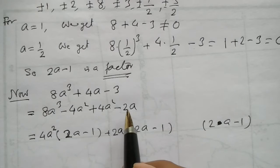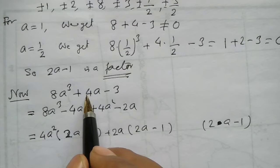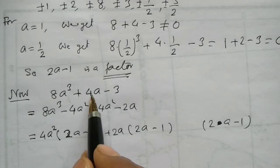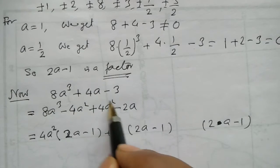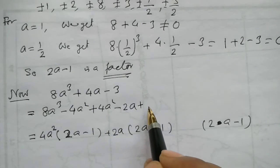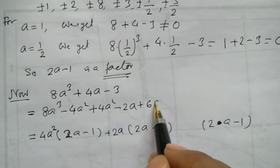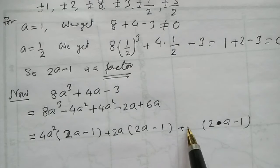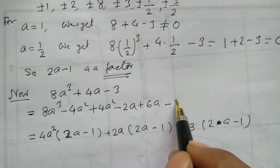Note that here we have 4a and minus 2a, so to get 4a we need to write plus 6a. For 6a, we can multiply by 3: 3 into 2a gives 6a, and 3 into minus 1 gives minus 3.